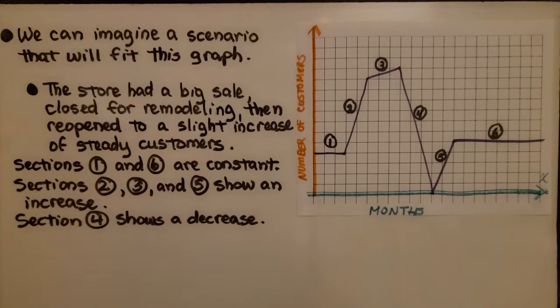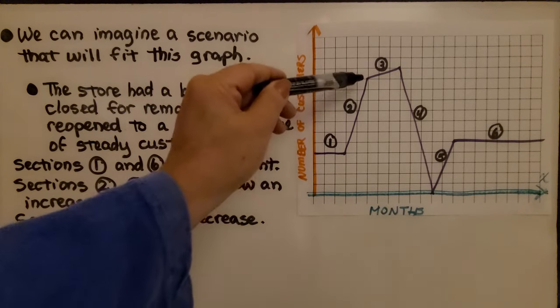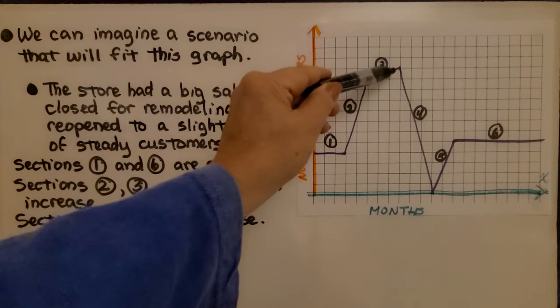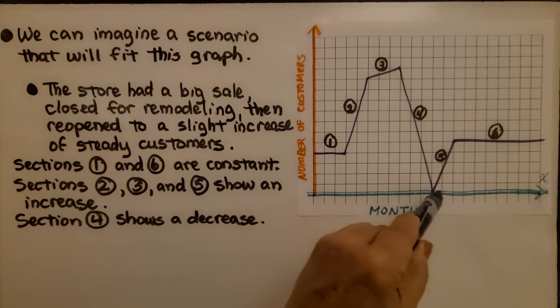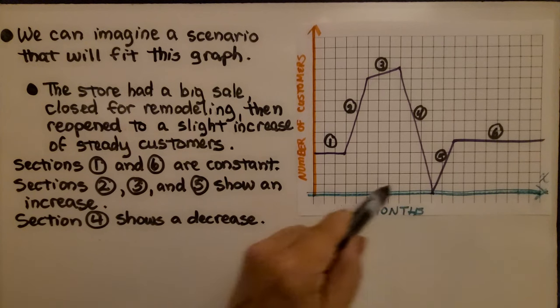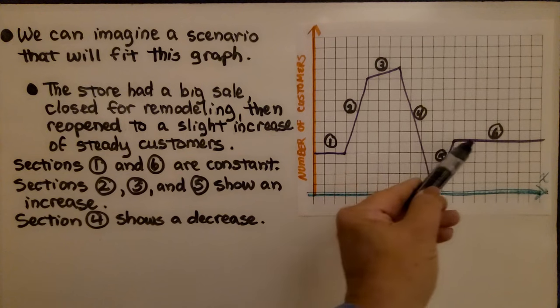Now take a look at this graph. This is the number of customers, and this is the months that the business was open. Look what happens: it goes steady, it increases, it increases slightly, then it falls dramatically all the way down to the x-axis where y is zero, and then it goes up and then it's constant again.